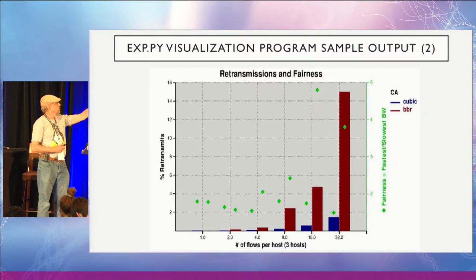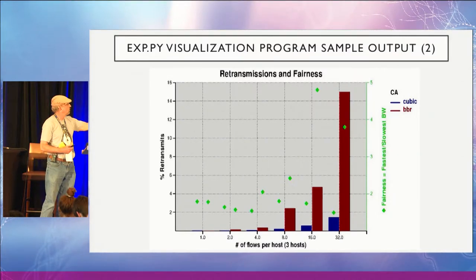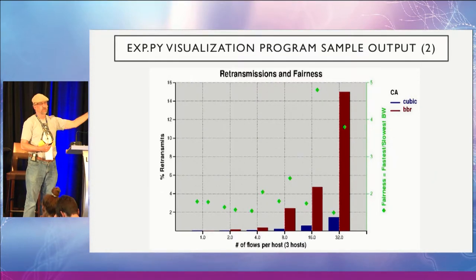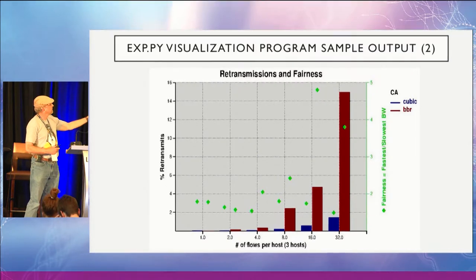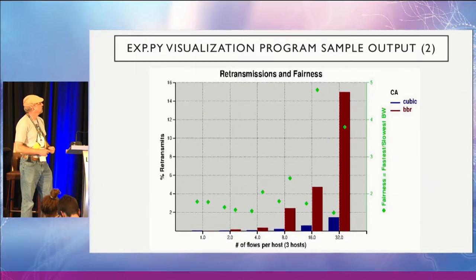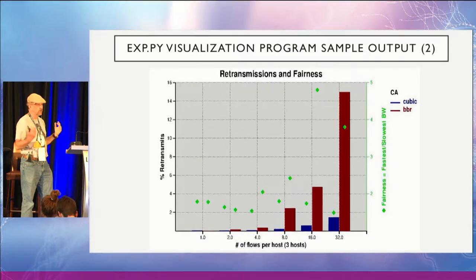I can also create bar graphs. This one shows the number of retransmits as bars, and the green diamonds represent fairness, for both cubic and BBR. Initially there are very few retransmissions, but as we increase the load with BBR, we grew up to 15% retransmissions — 15% of packets sent are retransmissions. The fairness starts more or less okay, but as we increase the load, BBR for this experiment turns out to be a little less fair — the ratio between the slowest and fastest is between 4 and 5 in the worst case. That's a heavy load: 32 flows per host with three hosts, so 96 flows total going to one server.